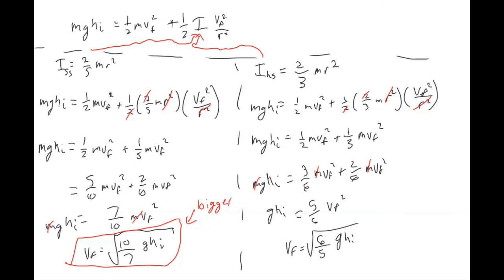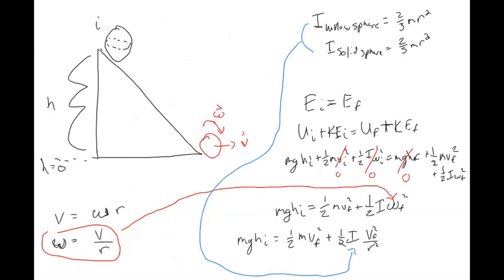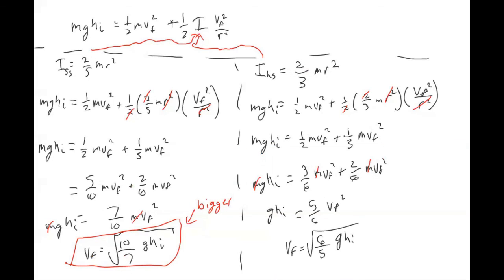The reason we were able to make this important substitution was because when something is rolling, the linear velocity and angular velocity are related by v = r × omega. Because we could make that substitution, everything could cancel and we're left with velocity relating to just gravity and height.